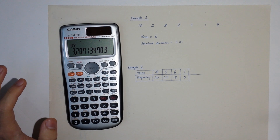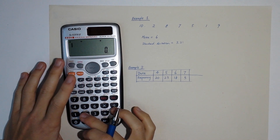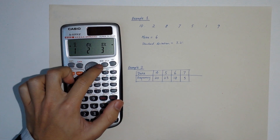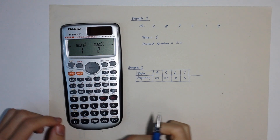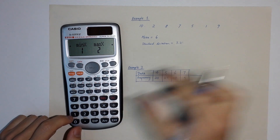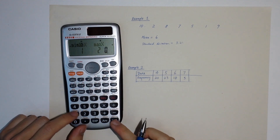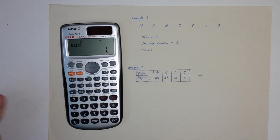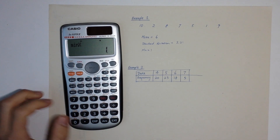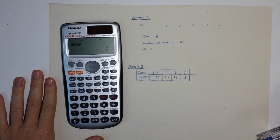If you look further into Shift 2 using the arrow, you can also see min and max. In case you want to know these for a non-ordered list, you can use those as well, but normally you do not need that.